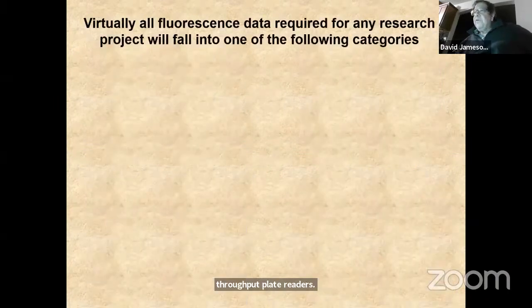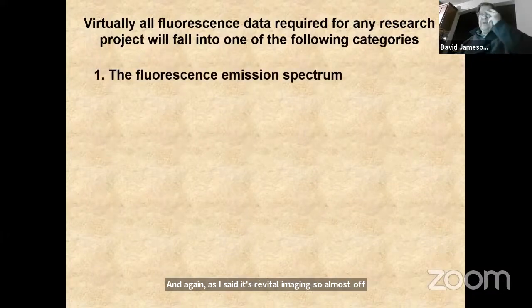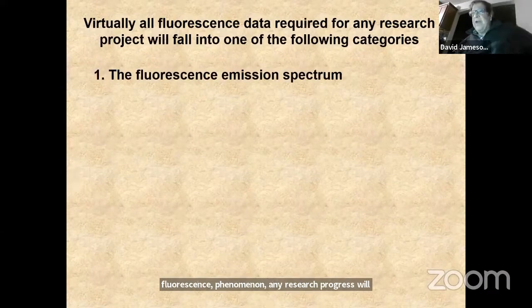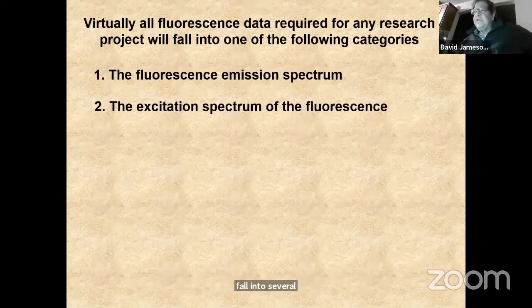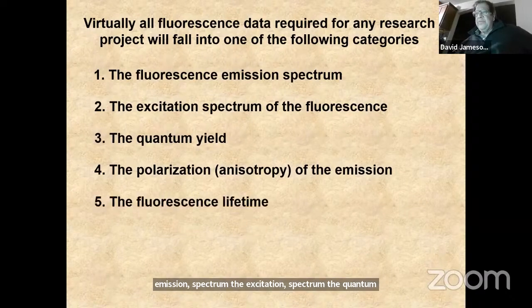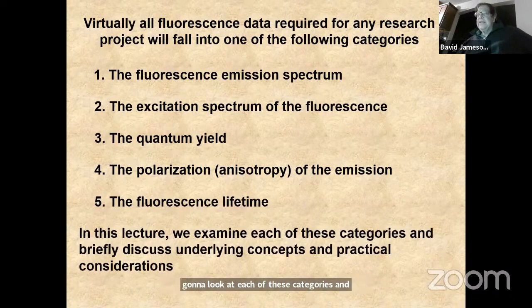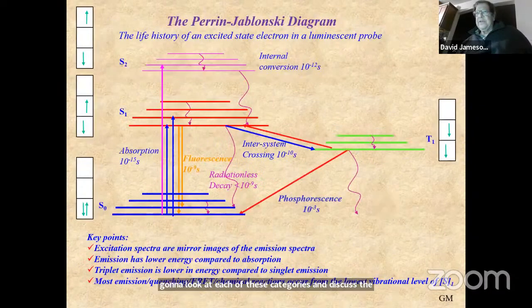Almost all fluorescence phenomena in any research will fall into several categories: the fluorescence emission spectrum, the excitation spectrum, the quantum yield, the polarization or anisotropy of the emission, and the fluorescent lifetime. In this lecture, we're going to look at each of these categories and discuss the underlying concepts and practical considerations.